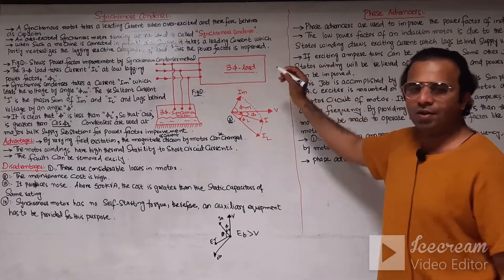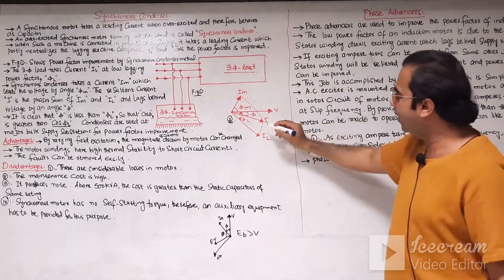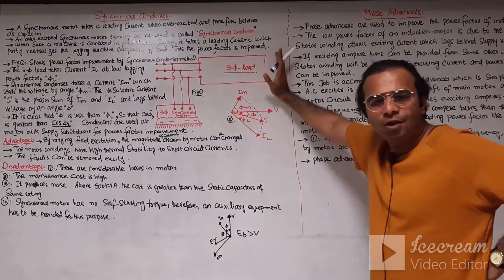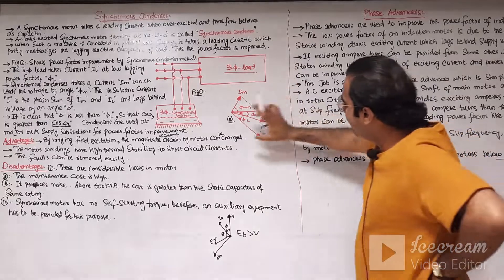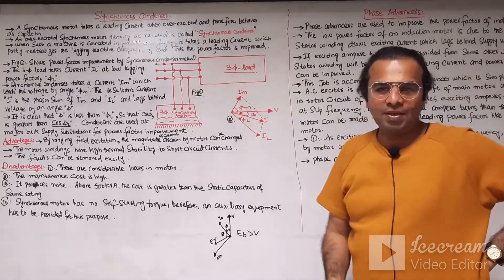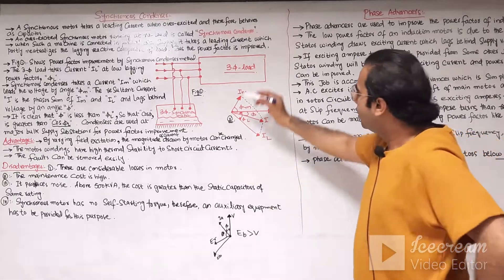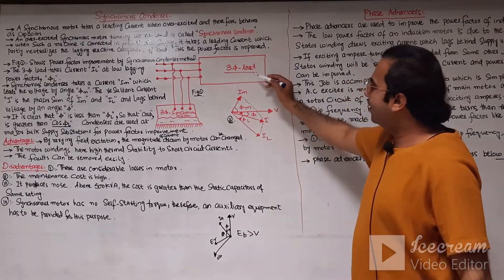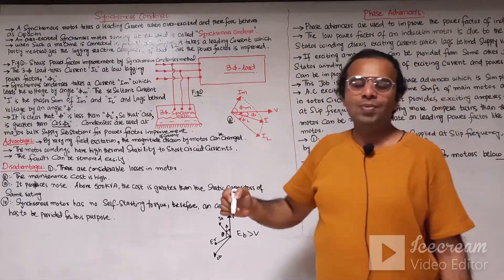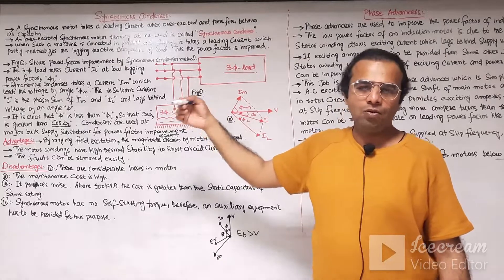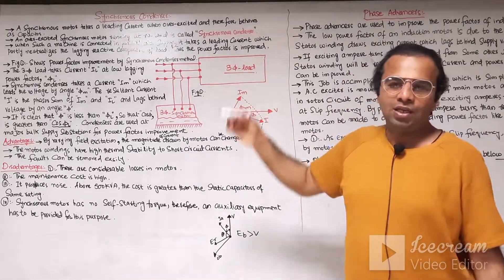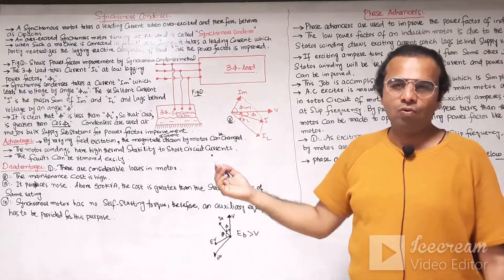Now let us discuss the power factor improvement method through the synchronous motor. An overexcited synchronous motor running at no load is called a synchronous condenser. When this synchronous motor is running at no load, it behaves like a synchronous capacitor or synchronous condenser. It takes a leading current from the main source and neutralizes — partly or completely — the lagging reactive component of the load, and hence the power factor of the three-phase inductive load is improved.